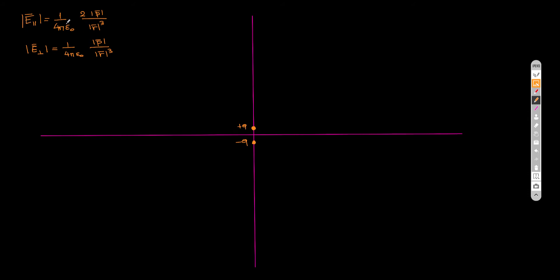This is the equation for the electric field of the dipole parallel to the dipole axis. One thing I want to point out: this is just an approximation. This expression is only an approximation to the magnitude of the electric field, and this approximation is valid if the magnitude of R is much greater than the separation of the dipole S.